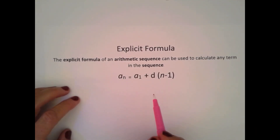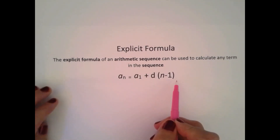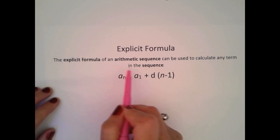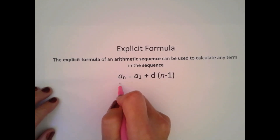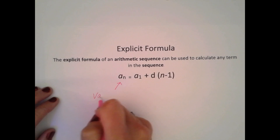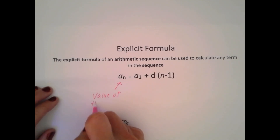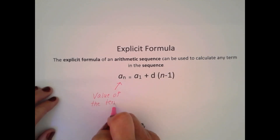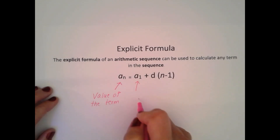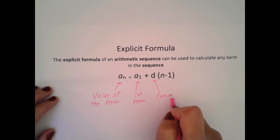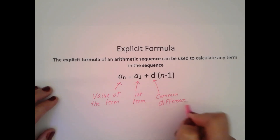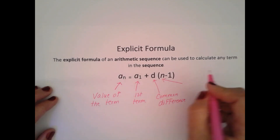Look at the formula that we derived from the previous example. This is the explicit formula. The explicit formula of an arithmetic sequence can be used to calculate any term in the sequence. A sub n is the value of the term. A sub 1 is the first term. D is the common difference, and n is the number of the term.